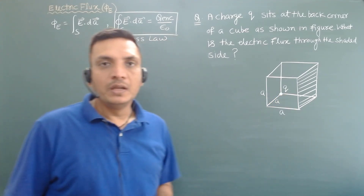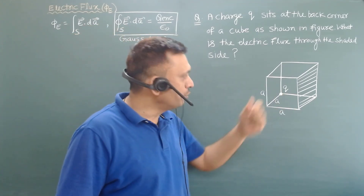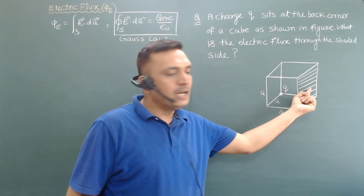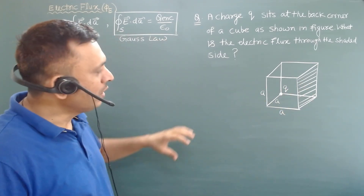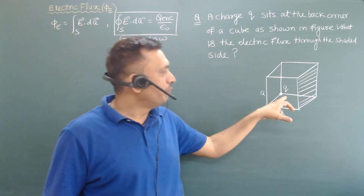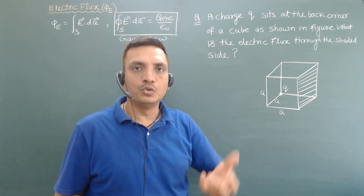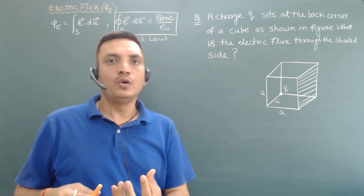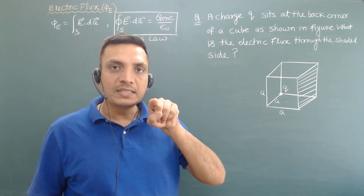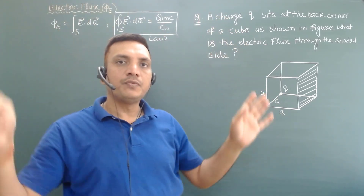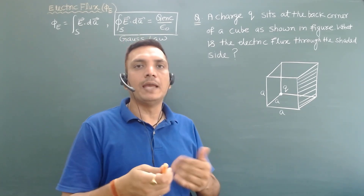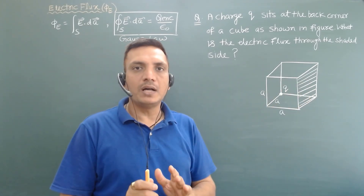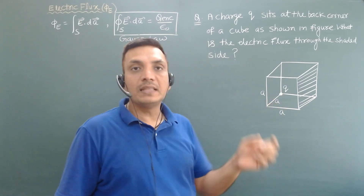Now in this question we will use the symmetry of the cube. We will find the flux through a closed surface and then see the contribution to one particular surface. To apply Gauss's Law, we will consider a bigger cube that contains 8 similar cubes — 4 on the upper side and 4 on the lower side — so that charge q is at the center of the bigger cube. Since charge q is inside, we will get the flux through the bigger cube as simply q by epsilon naught.